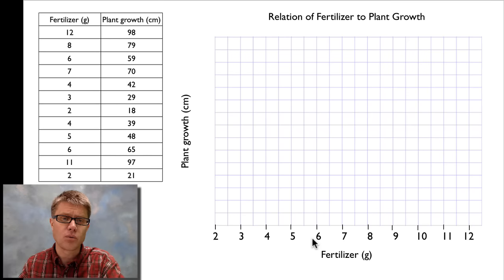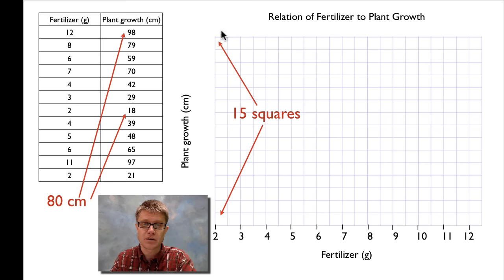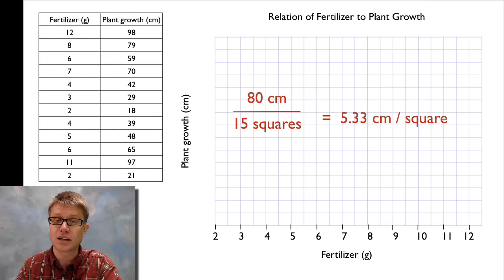Now let's try and do the y-axis or plant growth. I count 15 squares here on my graph paper and I've got a range of 80 centimeters of plant growth. So likewise I could divide that 80 centimeters by the number of squares and that's going to give me 5.33 centimeters per square. If I were to round down to 5, I wouldn't have enough room to put all of my data here on the side. So what I can do is I can round up and I can say that maybe every one of these grid lines is going to be 6 centimeters.